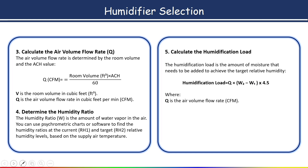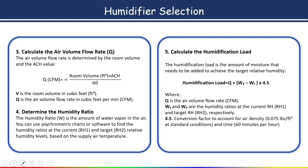In this formula, Q is the air volume flow rate, W1 and W2 are the humidity ratios at the current and target relative humidity respectively, and 4.5 is the conversion factor to account for air density and units. These are the steps to follow.